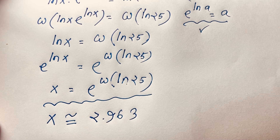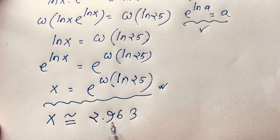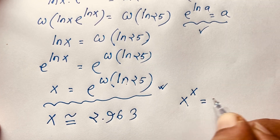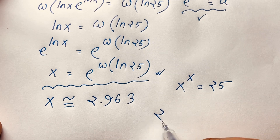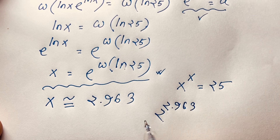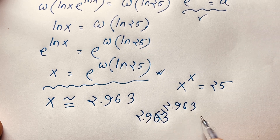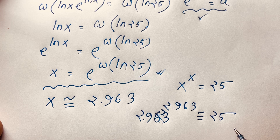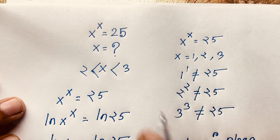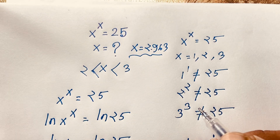This is the value of x. This answer uses a calculator, which most schools or colleges may not allow. So x is approximately 2.963. You can verify: 2.963 to the power 2.963 is equal to 25, so the left-hand side equals the right-hand side. Therefore, x is equal to 2.963, which is the value of x in this exponential expression.